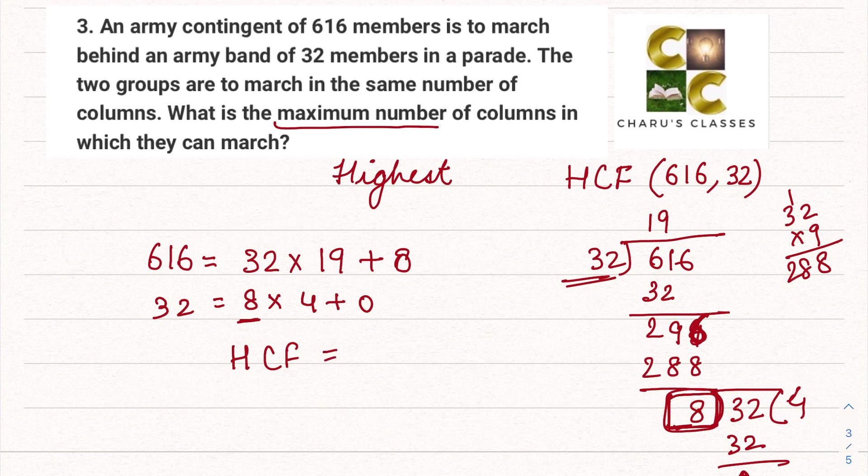Here the last divisor is 8, that is the HCF. So here HCF is equal to 8. That means maximum number of columns in which they can march is 8. If you like the video please like, share and subscribe. Thank you.